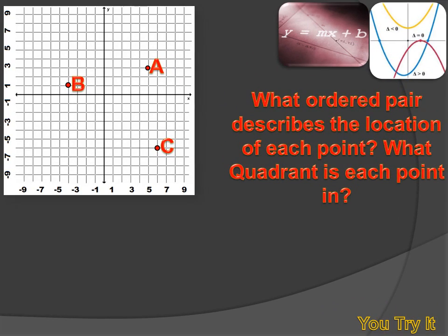Hopefully this is just review for you. We're supposed to determine the ordered pair that describes the location of each of these points. And then we're supposed to determine what quadrant each of the points is in. Well, we'll start with A. That makes sense, doesn't it? A is about 5 units to the right of the origin. That's 5 positive x and then 3 positive y. So the point is 5, 3. And it's in quadrant 1.